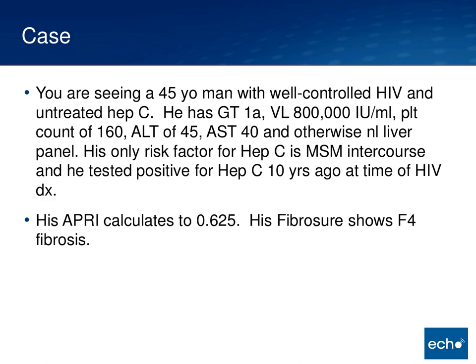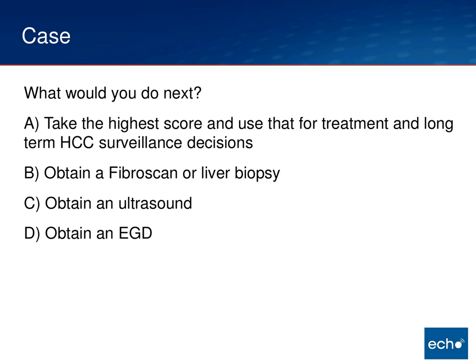So what are you going to do? What would you do next? Would you just take the highest score and base your treatment decisions and long-term HCC surveillance on the highest score? Would you get a FibroScan, or if that's not available in your community, get a liver biopsy? Would you get an ultrasound? Or would you go to an EGD? There's no real one right answer — I'll talk through each of them. But I just want to see what you would do in your clinic, so if you could vote on one of those four options.